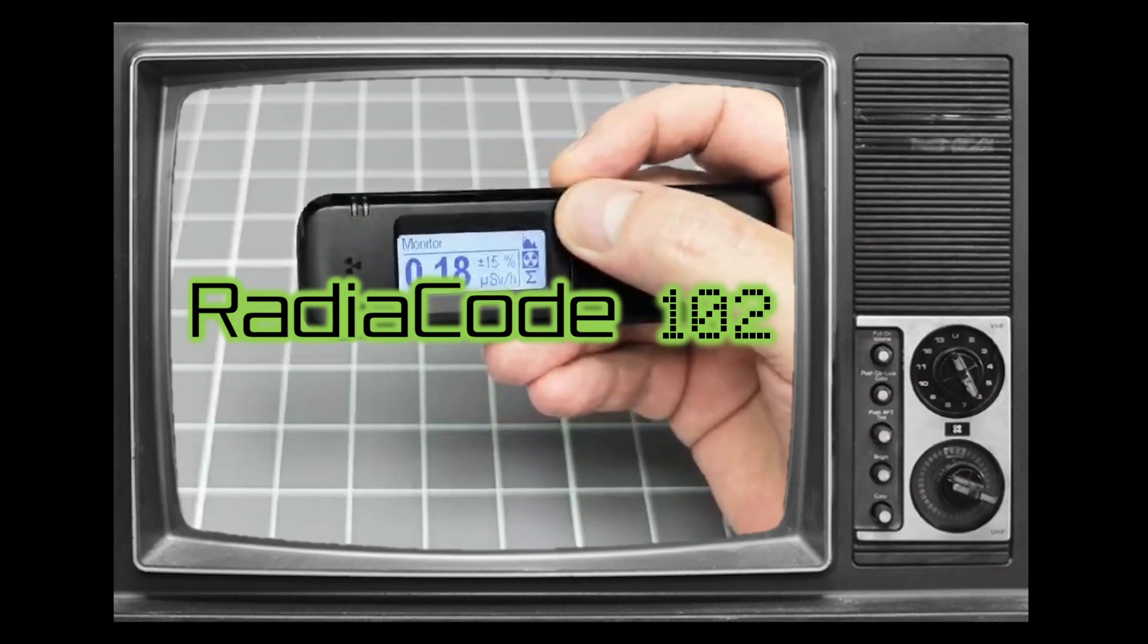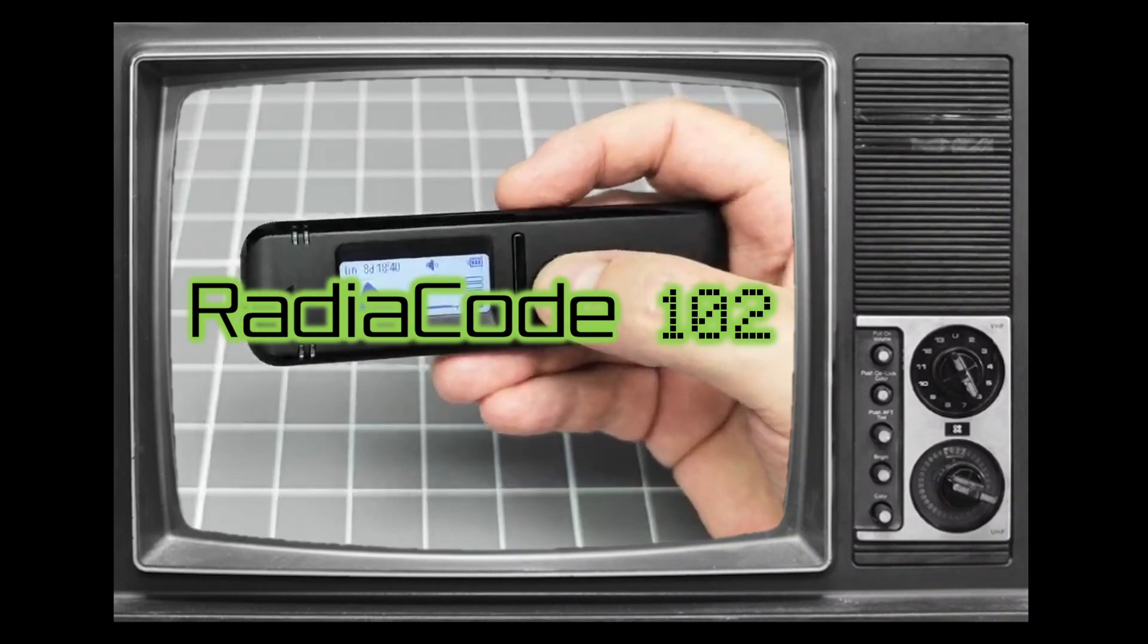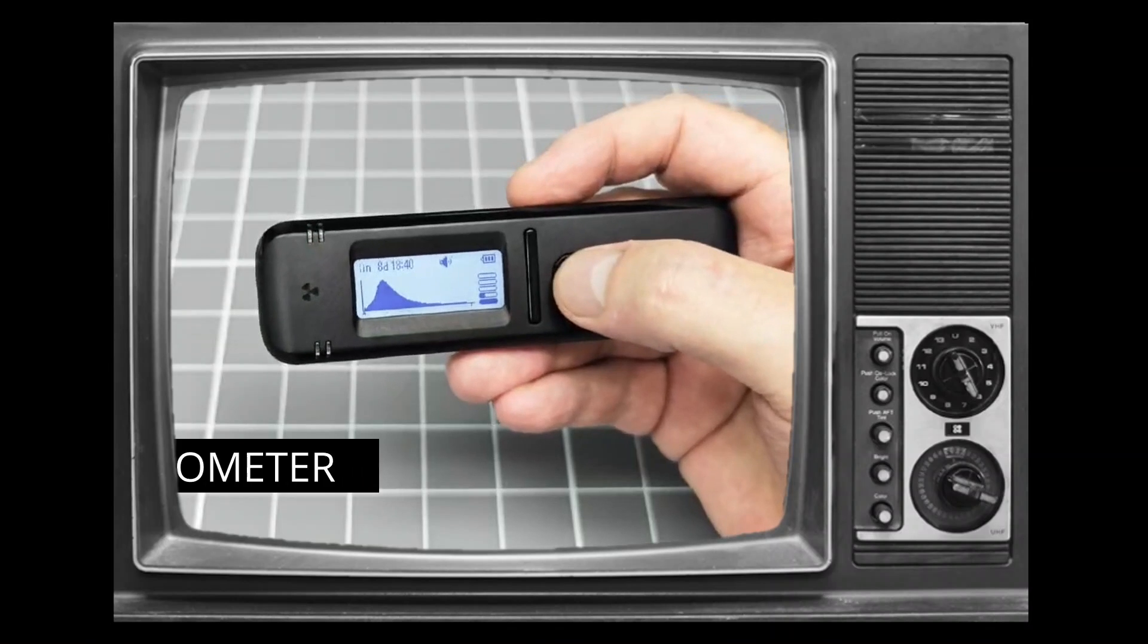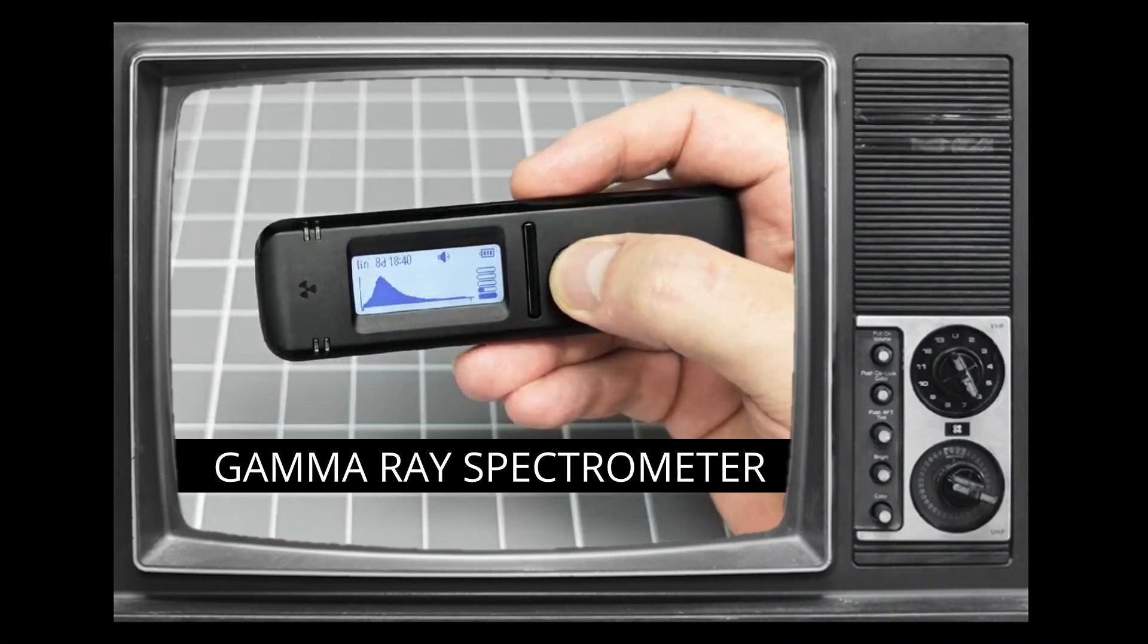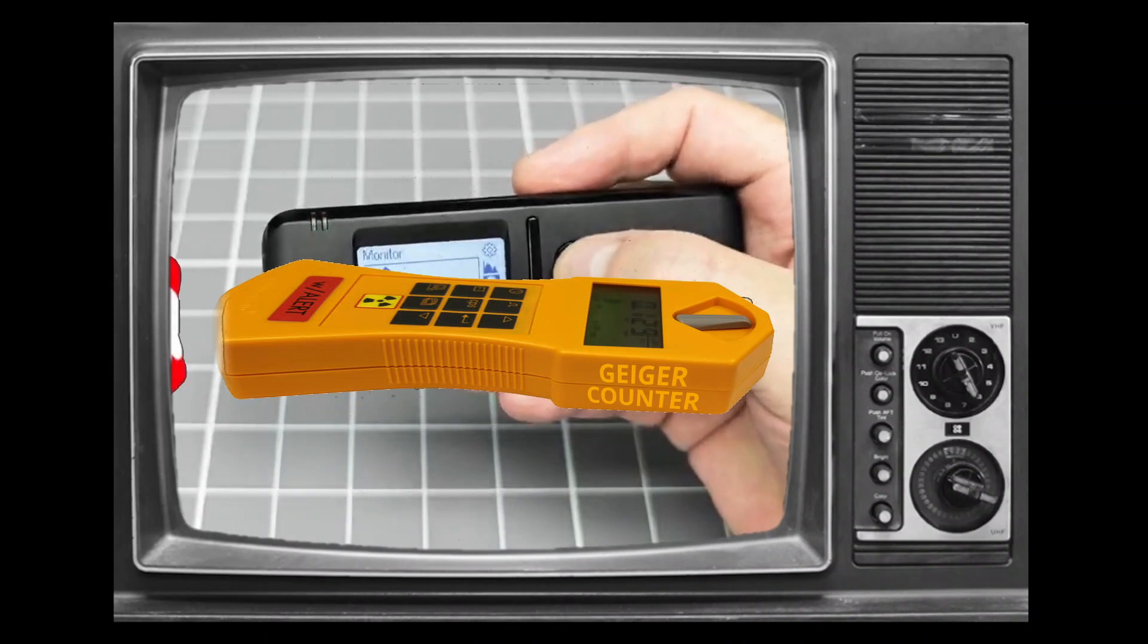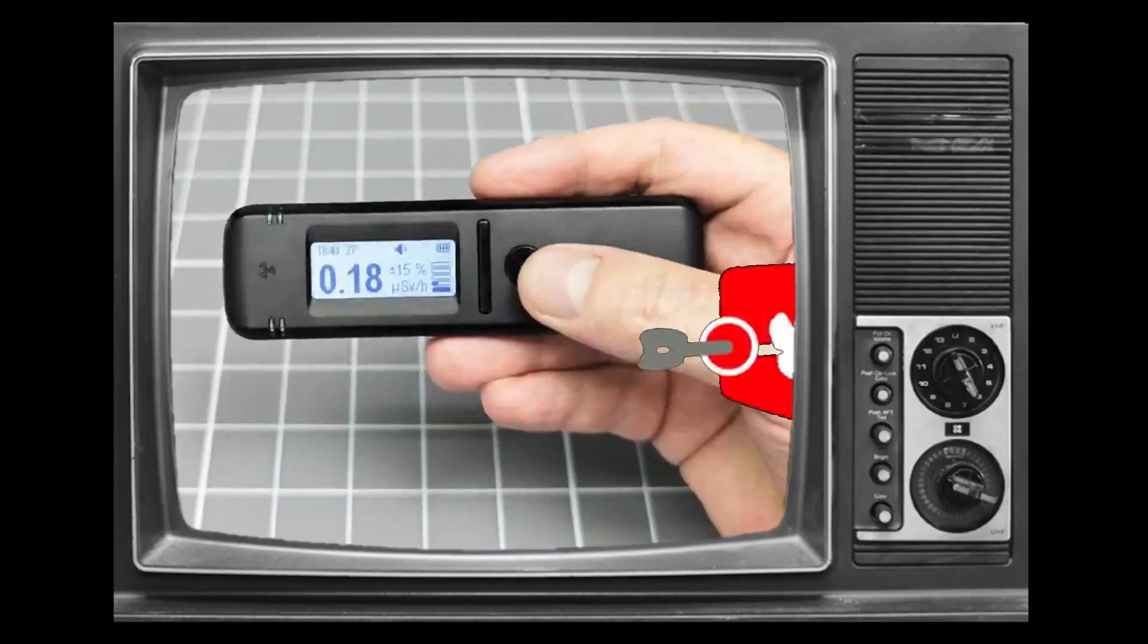The device that I am reviewing today is not a Geiger counter at all. Instead, it is a fully-fledged gamma-ray spectrometer. This class of device eats Geiger counters for breakfast.